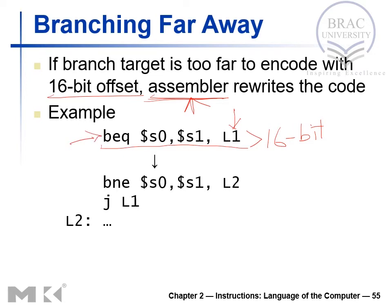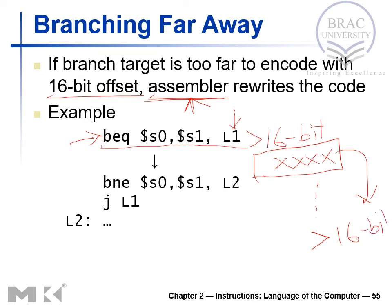Let's say the branch instruction is at address XXXX, and L1 is at a distance greater than 16 bits away. BEQ and BNE are I-type instructions with only a 16-bit offset field. The assembler sees the BEQ instruction and inverts it to BNE, branching to a nearby label L2 which is within 16-bit range.